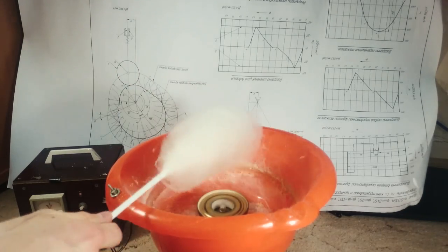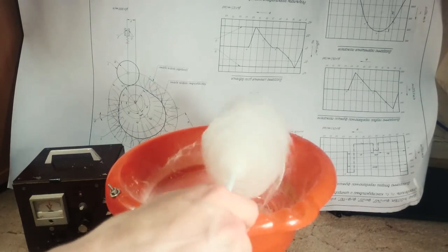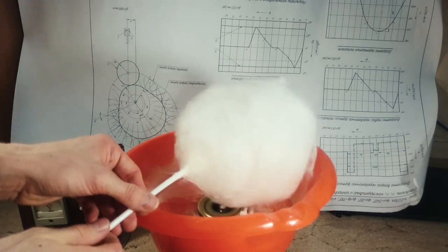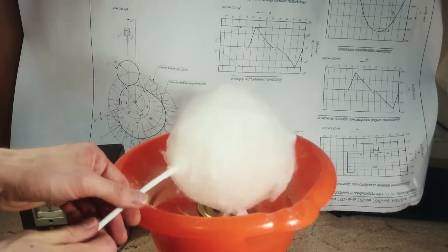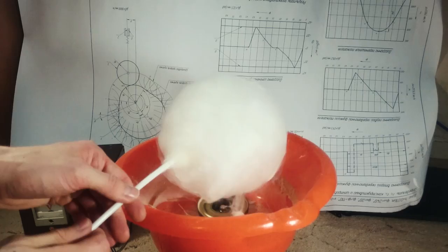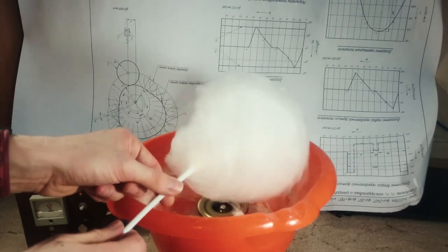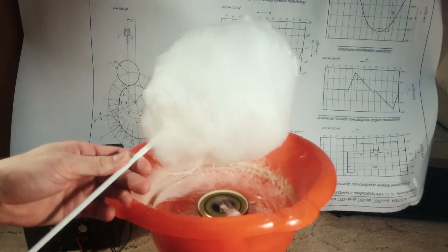But it is a better idea to use an electric source of heat. Maybe I will make one and show it to you in another video. But no matter what, the machine is not so bad, and it can produce a big cloud of cotton candy.